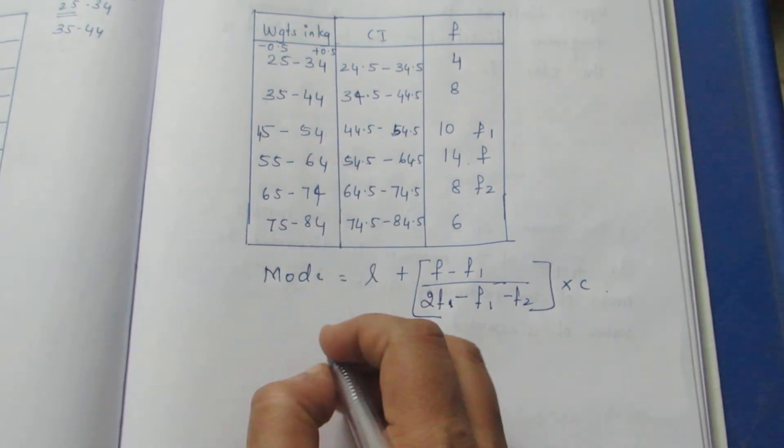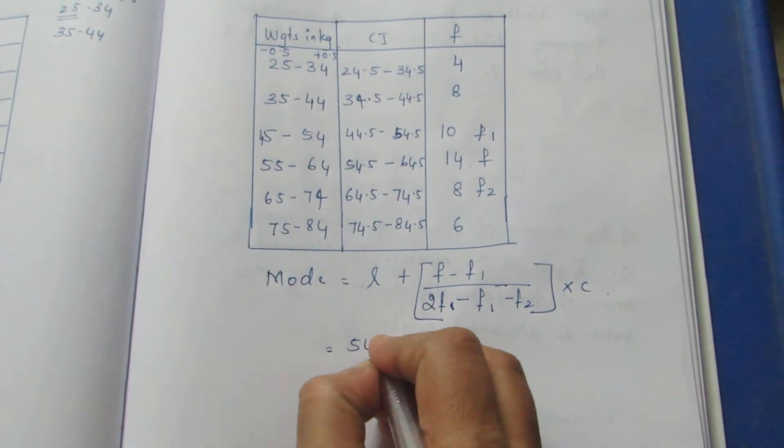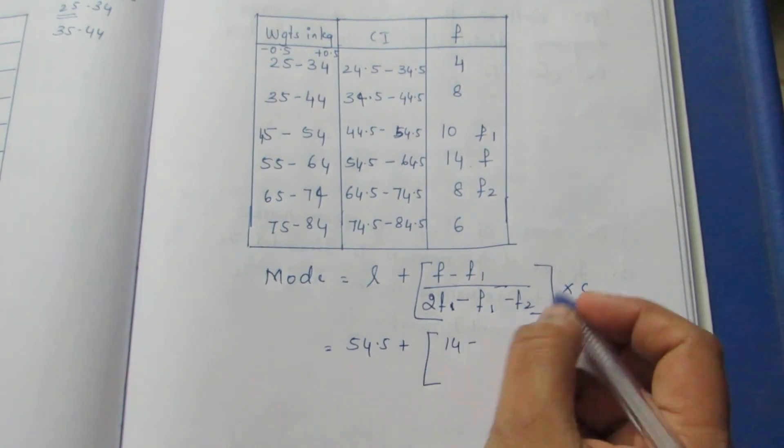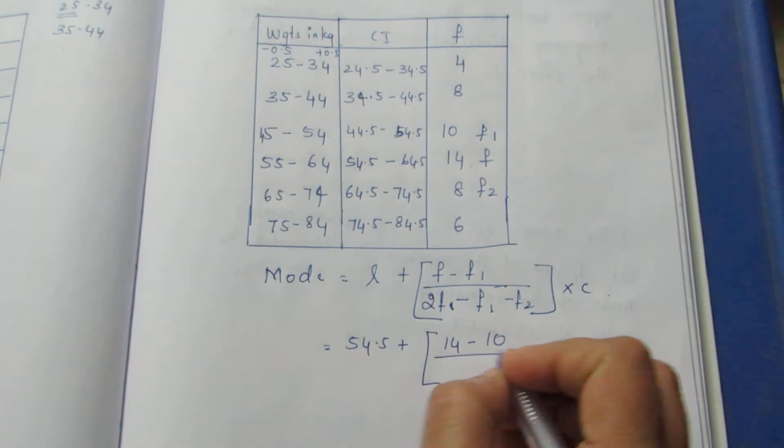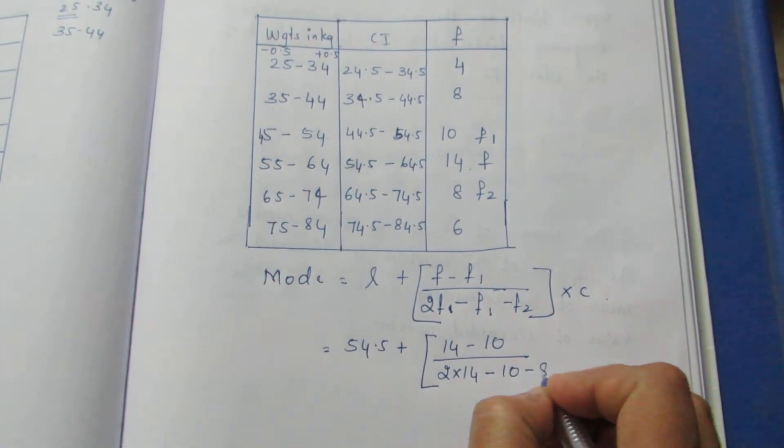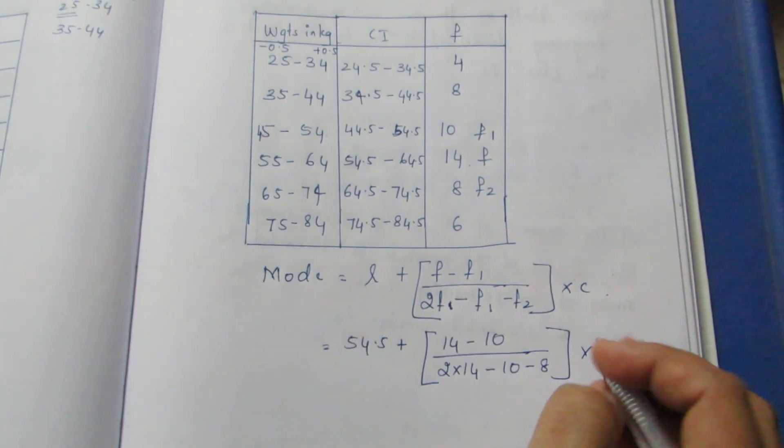This is the upper limit and this is the lower limit. Lower limit is 54.5. Plus F, 14 minus F1 10 by 2 into 14 minus 10 minus 8 into this one difference we will see 10.